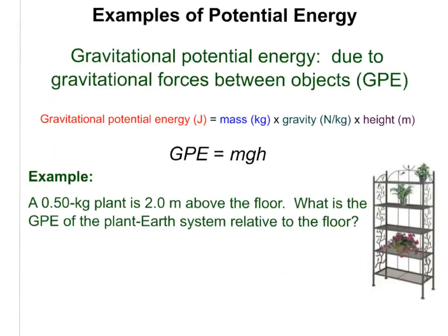Now let's talk about gravitational potential energy, abbreviated GPE. Gravitational potential energy is due to the gravitational forces between objects. It is critical that you always use a reference point. For example, there is gravitational potential energy between an apple dangling from a tree branch and the earth.